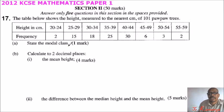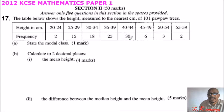Part (a): state the modal class — you get one mark. The modal class is the class that has the highest frequency. Looking at the frequencies, the highest value is 30, so the modal class is 40 to 44.